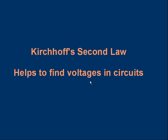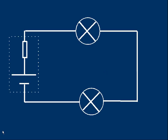Welcome to this lesson on Kirchhoff's Second Law, which is a useful tool to work out voltages in circuits. Let's start with a simple circuit: a cell, a resistor, and two bulbs all in series. The resistor in the dotted box represents the internal resistance of the cell. All cells and batteries have some built-in resistance — we call that the internal resistance. It's simply a resistor in series with the cell, all in one unit inside the dotted box.